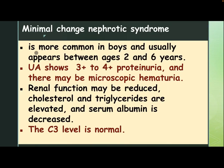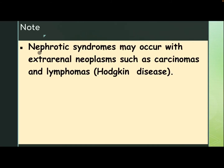Minimal change nephrotic syndrome is more common in boys and usually appears between ages 2 and 6 years. Urinalysis shows 3 to 4 plus proteinuria and there may be microscopic hematuria. Renal function may be reduced. Cholesterol and triglycerides are elevated and serum albumin is decreased. C3 level is normal. Note that nephrotic syndrome may occur with external neoplasms such as carcinoma and lymphoma, like Hodgkin disease.